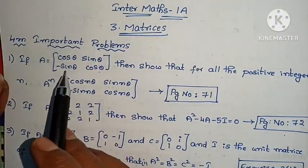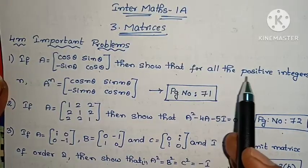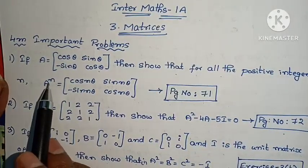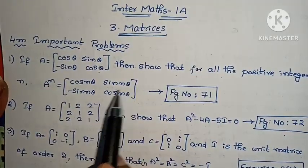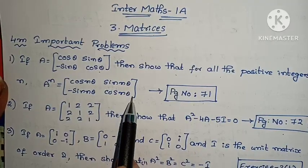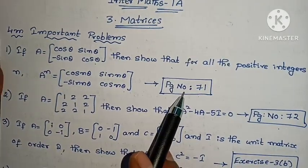If A equals to [cos θ, sin θ; -sin θ, cos θ], then show that for all positive integers n, A^n equals to [cos nθ, sin nθ; -sin nθ, cos nθ]. The example problem page number 71.